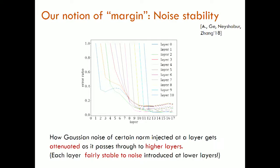We introduce a new kind of noise stability, which measures how Gaussian noise injected at a layer gets attenuated as it passes through the higher layers. The plot shows: noise is injected at some layer (x-axis), and for each plot, the highest point is where the noise is injected. The y-axis is the error ratio — how much noise is injected as a ratio of the norm of the layer's vector, going up to ratio one. Even with that much noise — basically as much noise as the vector — the higher layers reject the noise. The noise started off being as high as the norm of the vector, but at higher layers it gets attenuated to 10–20% very quickly. So higher layers reject noise.